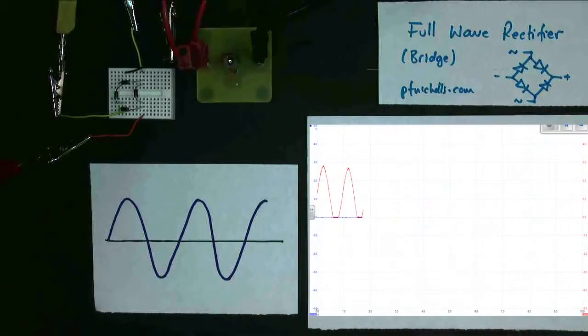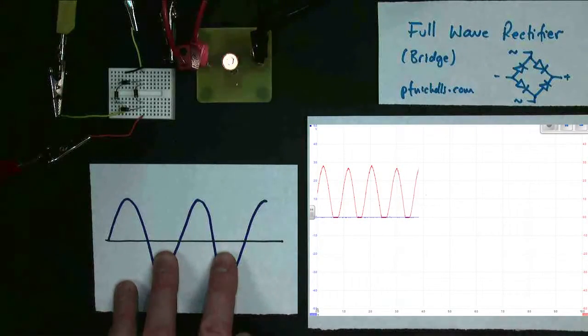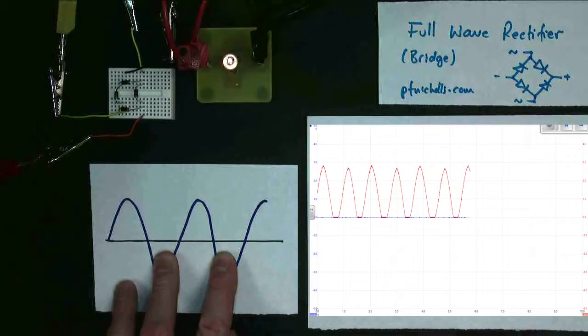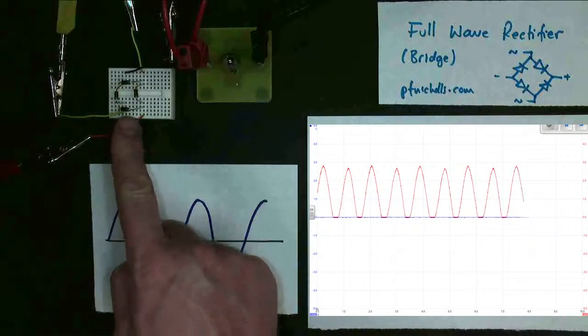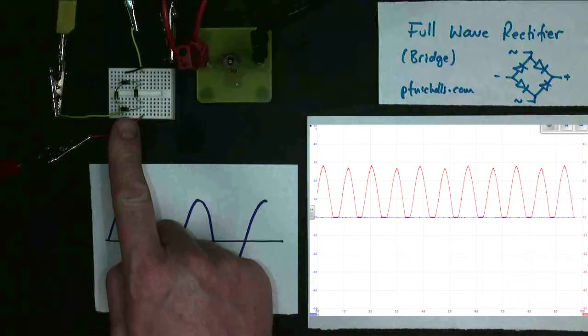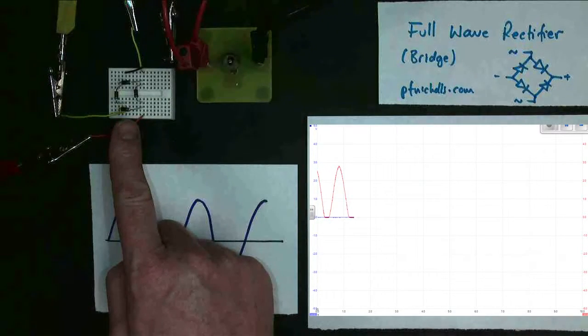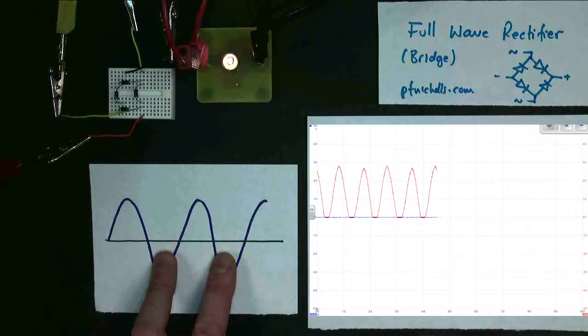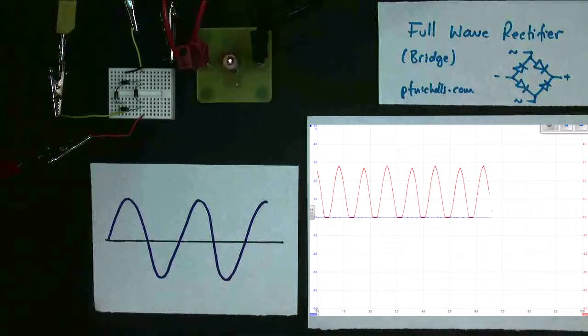So to solve the problem of losing half of our power, I've now used a more complex rectifier. It involves having four diodes, and I'll try and explain how it works in a few minutes. But we can see on the oscilloscope display that I now have red peaks every time.